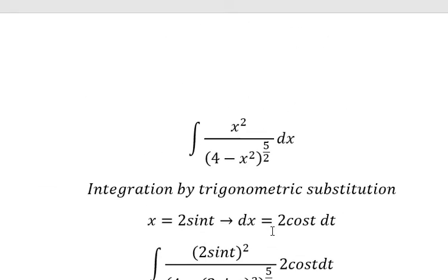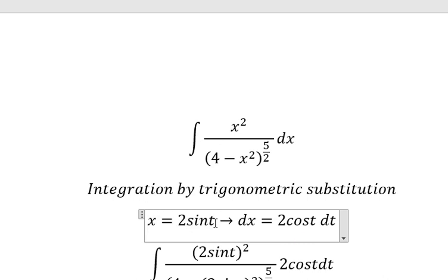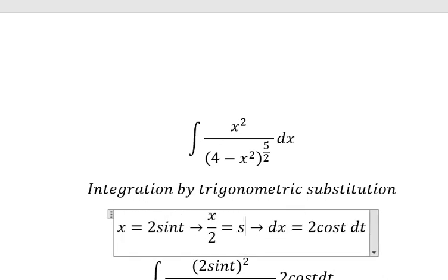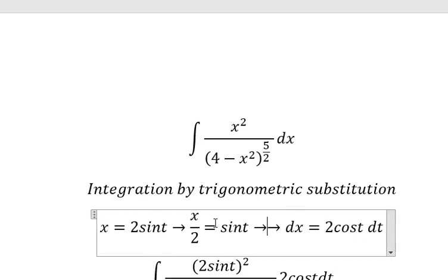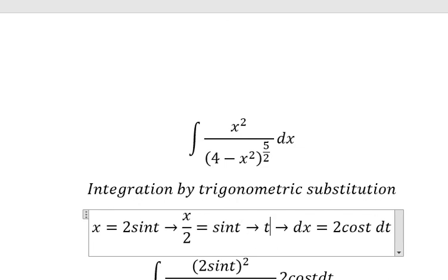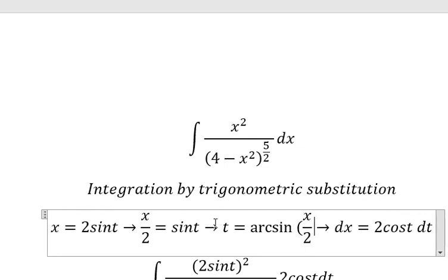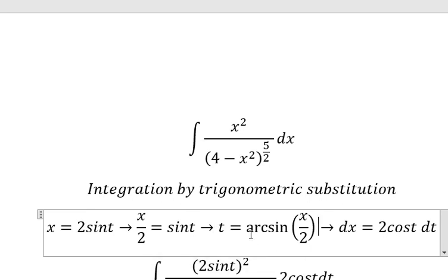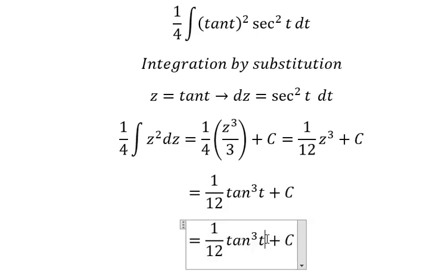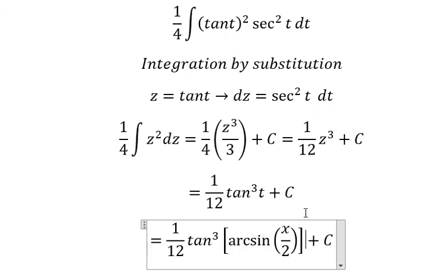Now for t, we need to divide both sides by two. We can find the value of t, which gives us arcsin of s over two. I will substitute this value of t back in. This is the end — thank you for watching.